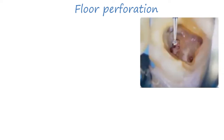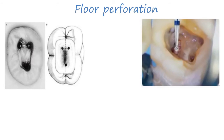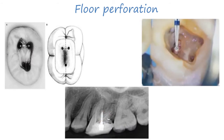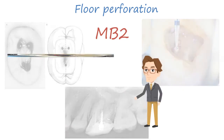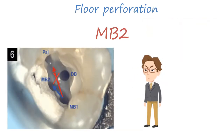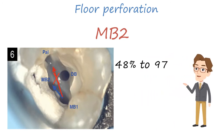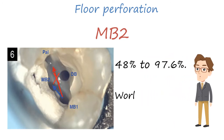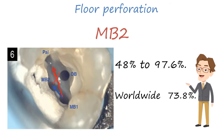Floor perforation mostly occurs due to failure to locate the canal orifices, neglecting the floor map during searching for the canals, and could happen during post-placement. Regarding MB2, you hear the statement 'MB2 is always there' a lot, but it is not true. MB2 prevalence ranges from 48% to 97.6%, with a worldwide global prevalence of 73.8%. So MB2 is not always there.